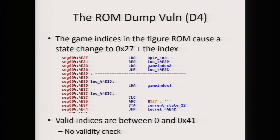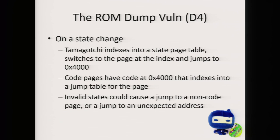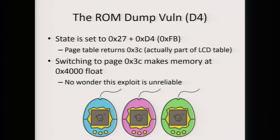So I started looking into how it worked. I was right about it being a jump table. What the figure does is fetch the game index, add 0x27 to it, and then jump to that in the state table — there's no validity check, so your problem is jumping to a state that's out of range. What does the Tamagotchi actually do with that invalid state? When the Tamagotchi does a state change, it jumps into the state table, pulls a page number out of that table, and jumps into address 0x4000 there. At address 0x4000 in that page, it has code that will make you jump into another jump table. Invalid states could therefore jump to a non-code page, jump to an unexpected address, or bring up an invalid page.